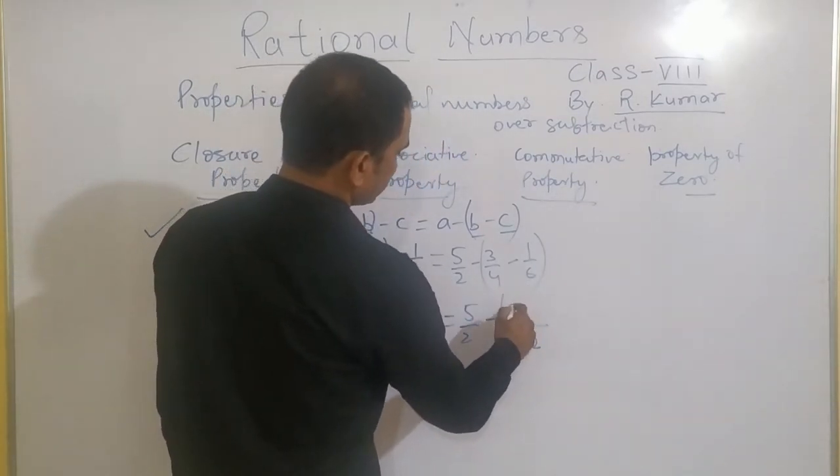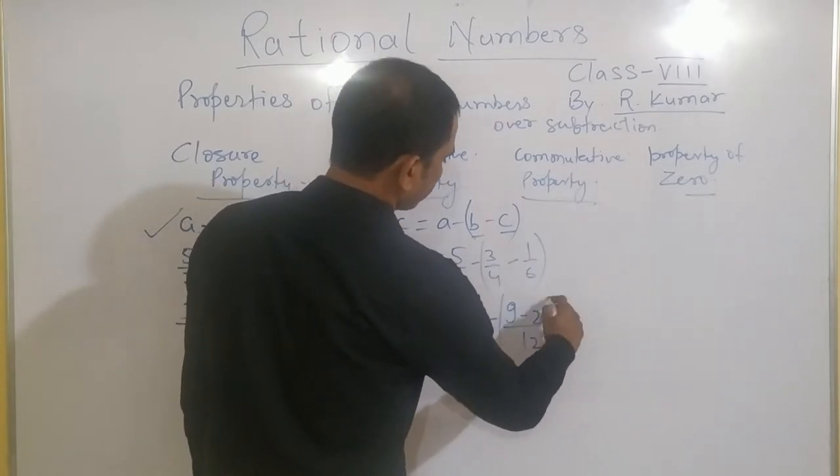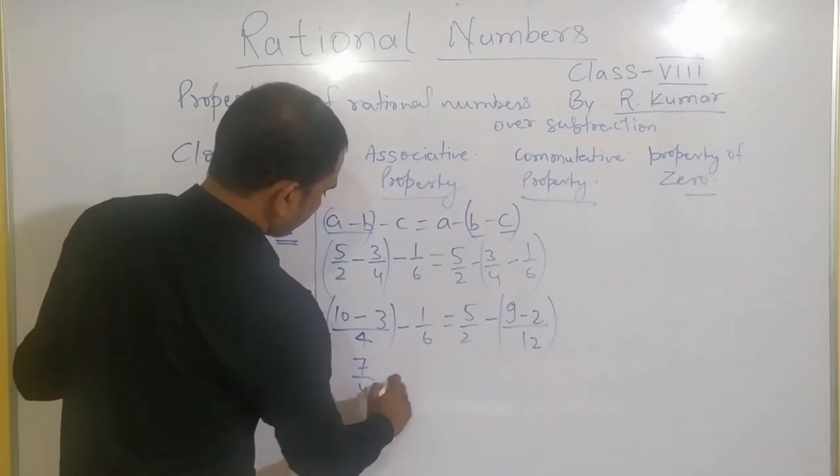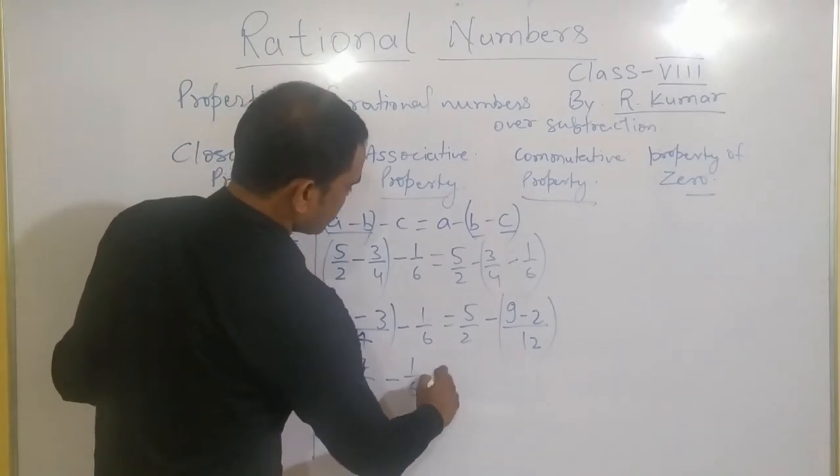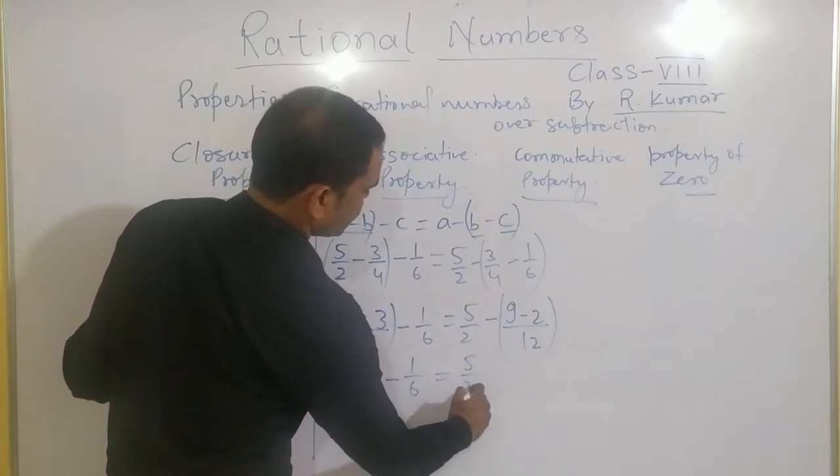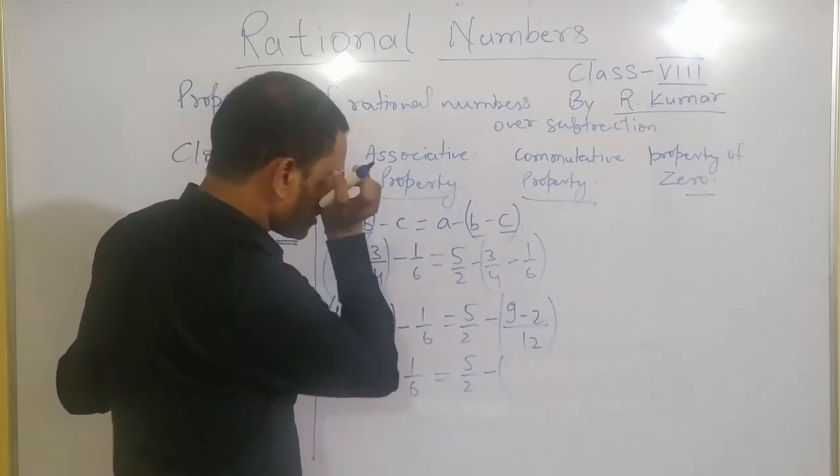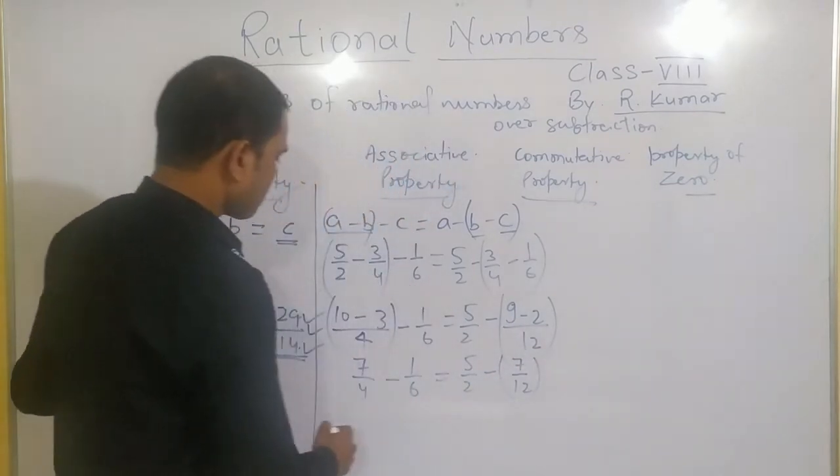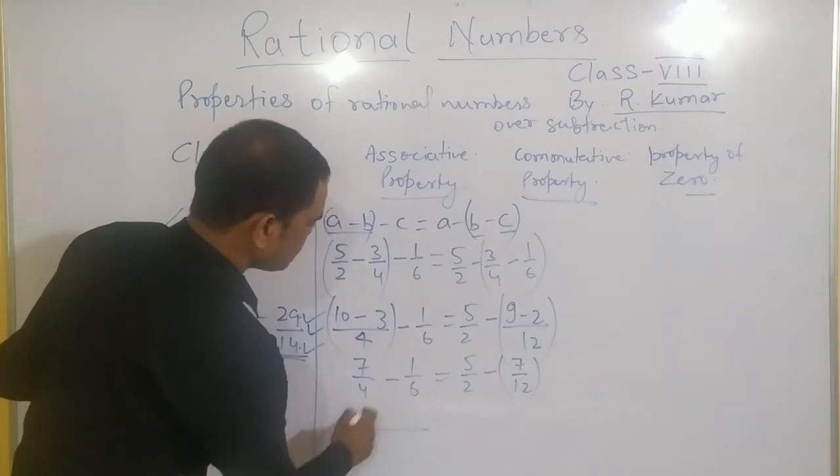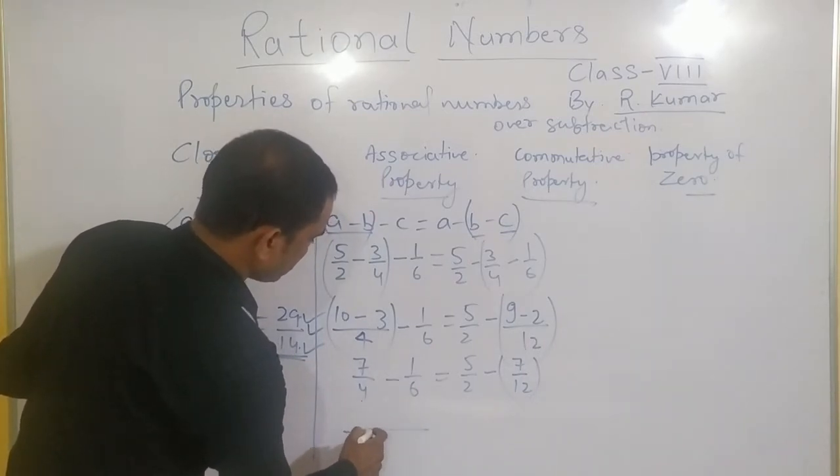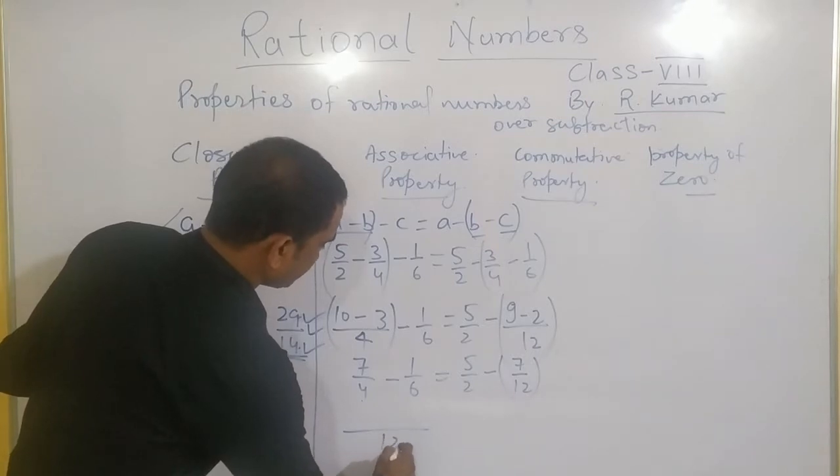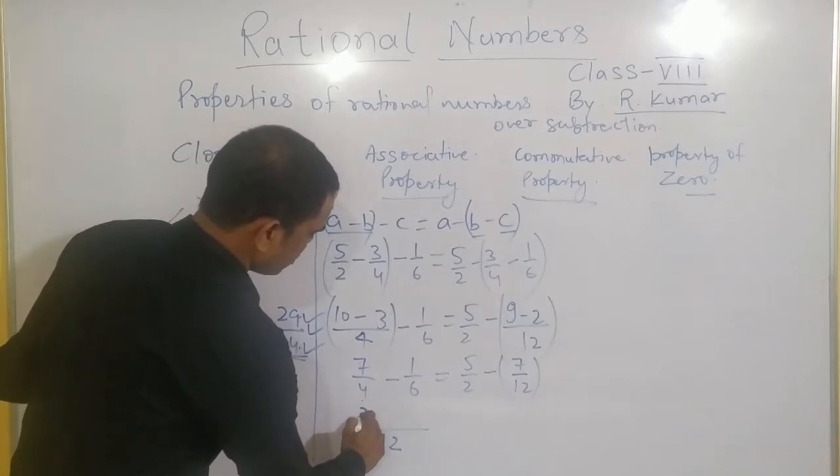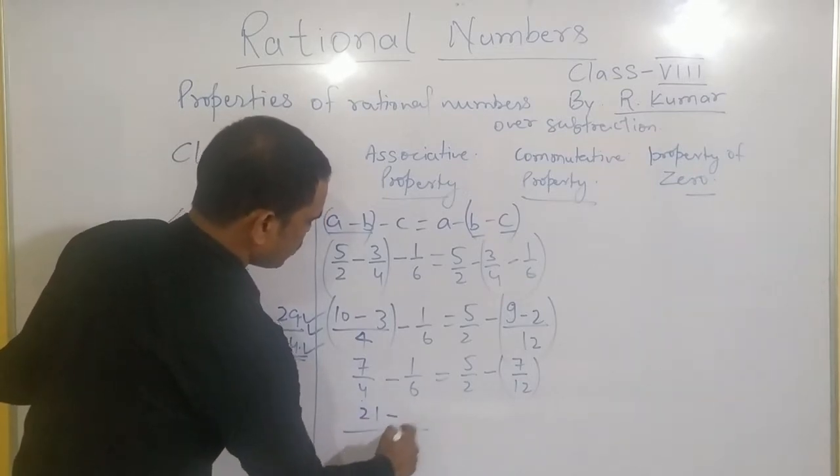4 times 3 gives 12 and 3 times 3 gives 9 minus 6 times 2 gives 12 and 2. 10 minus 3, it will be 7 by 4 minus 1 by 6 equals to 5 by 2 minus, inside the bracket, 9 minus 2, 7 by 12. This side will take LCM, 6 and 4. LCM of it will be 12, 4 times 3 gives 12 and 7, times 3, 21. 6 times 2 gives 12 and 2 here.